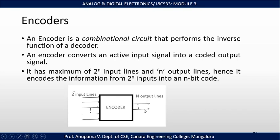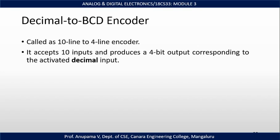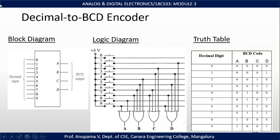Examples of encoders are the decimal to BCD converter and the 8-to-3 priority encoder. The decimal to BCD encoder is also called a 10-line to 4-line encoder. It has 10 input lines and 4 output lines, accepting 10 inputs and producing a 4-bit output corresponding to the activated decimal input. In its block diagram, it has 10 inputs varying from 0 to 9 and 4 outputs A, B, C, D, where A is the MSB and D is the LSB.